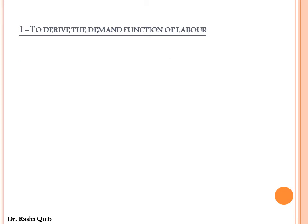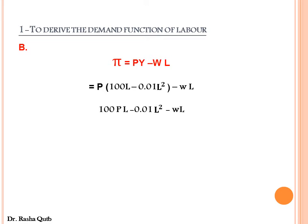Another way to derive the demand function for labor is by using the profit function. We know that profit equals total revenue minus total cost. In order to get the number of labor that maximizes the profit of the firm, we differentiate the profit function with respect to labor and equate this to zero. By doing so, we get the demand function for labor.